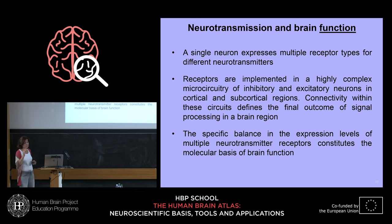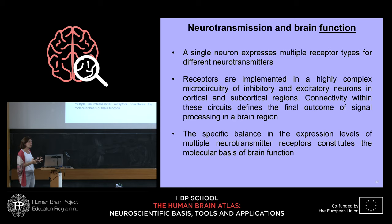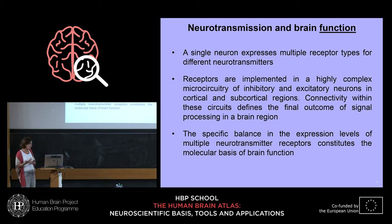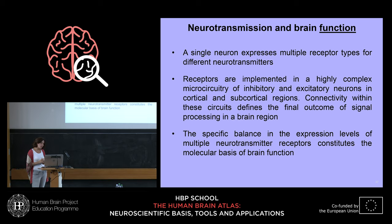Here are the important take-home messages: a single neuron can express multiple receptor types for different neurotransmitters; these different receptors are part of a very complex microcircuitry that enables brain function; and the specific balance of different receptors in a given brain region underlies the functionality of that brain region.